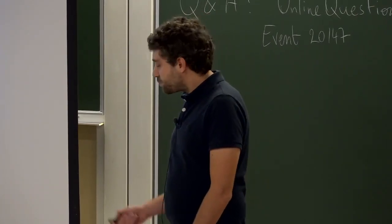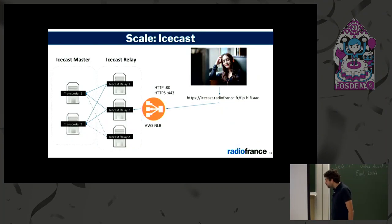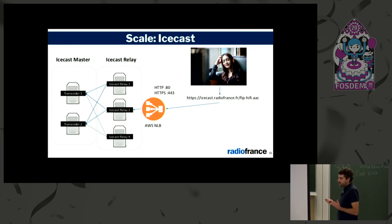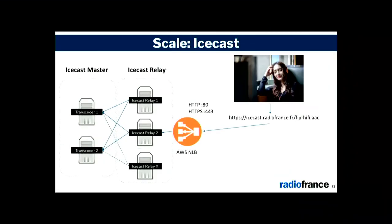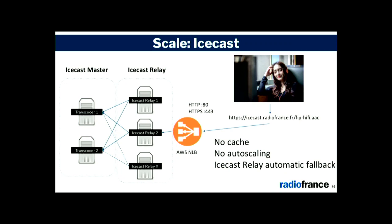We can start with scaling IceCast. We have two IceCast masters. IceCast uses a classical master-and-relay architecture, so we put a bunch of IceCast relays — each relay will relay all the streams from the IceCast master. IceCast has the functionality to switch between sources if one fails. In front of the relays, we put a load balancer in the cloud. There is no cache, and we can't auto-scale IceCast because it's a connected protocol — when you scale down, you disconnect all your clients. But we have automatic fallback between the two IceCast masters.